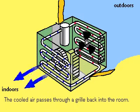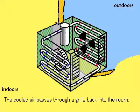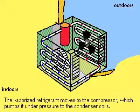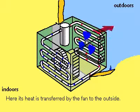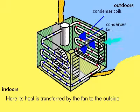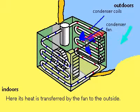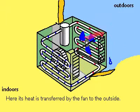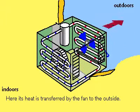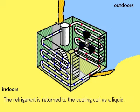The refrigerant gas is then compressed, increasing its temperature. To return to a liquid state, the refrigerant must give up its heat. The heat transfer is accomplished by having outdoor air blown through the condenser coils containing the compressed gas, thus cooling the gas and transforming it back to a liquid, which is then returned to the cooling coils.